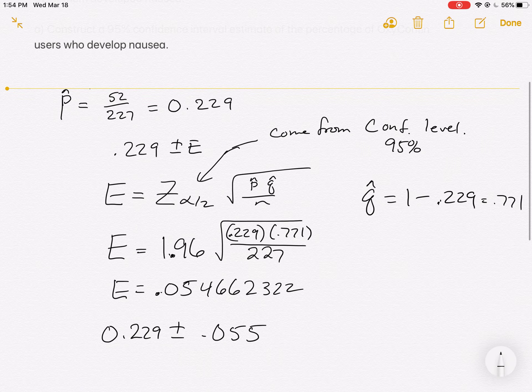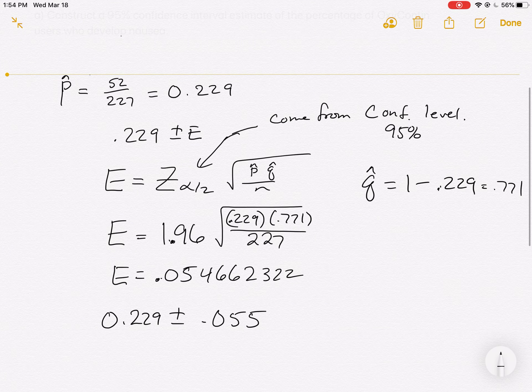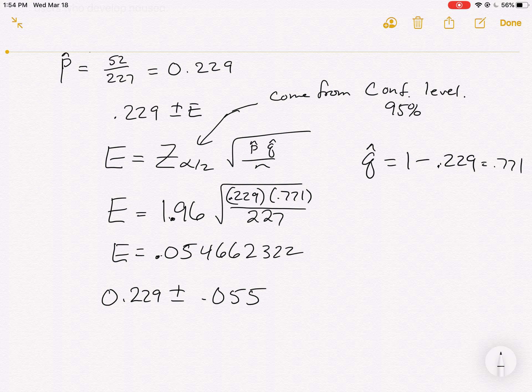And what I have to add and subtract from that is 0.055, is what I would use, rounding that off. So we're almost done. We have to take our 0.229 and subtract away the 0.055 and come up with the low value of 0.174 is less than.